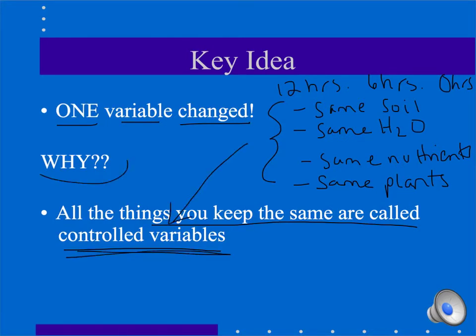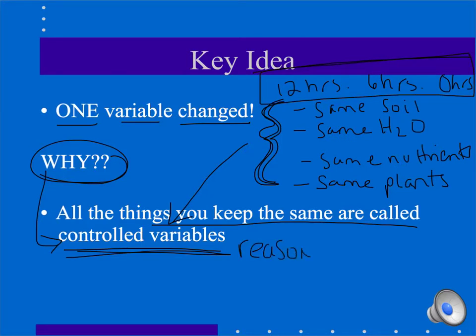The reason why I need to have these controlled variables is I want to make sure that none of these are affecting the growth. I need to make sure that the variable I'm changing is actually the reason for the data.